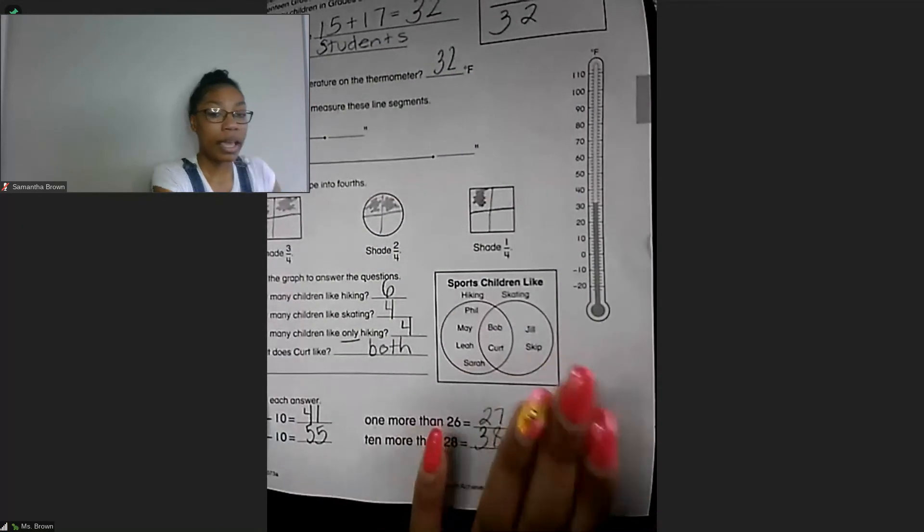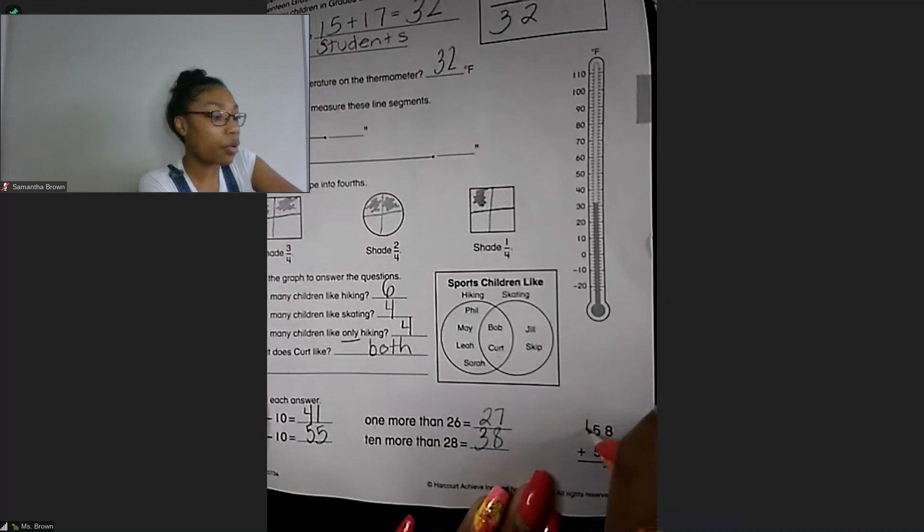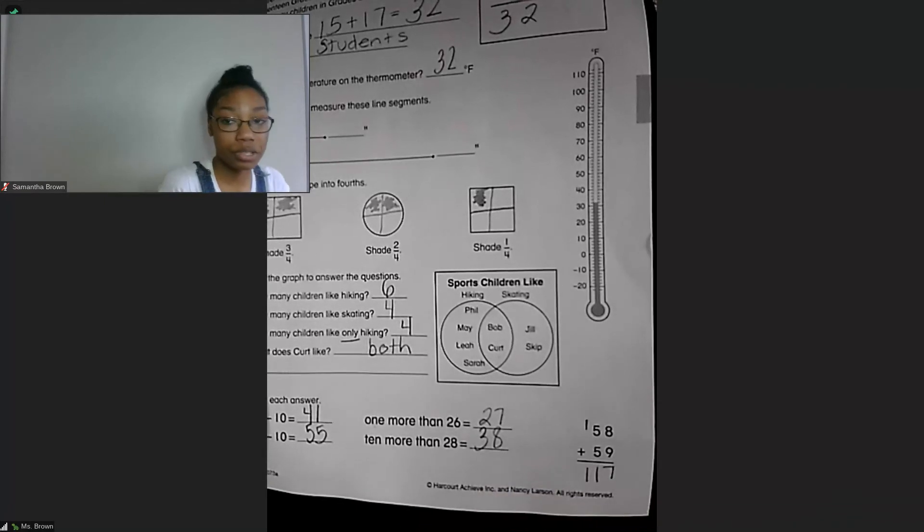And then 58 plus 59. So start on the right side, 8 plus 9. I know that 9 plus 9 is a double and it equals 18, so I take away 1 from 18 which equals 17. So we have our 7 here, bring our 1 over. 5 plus 5 is a double, that equals 10. 10 plus 1 equals 11. So we bring our 11 down to get 117.